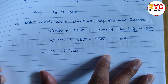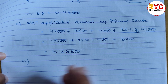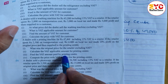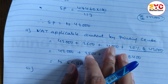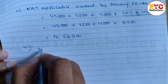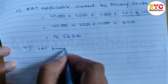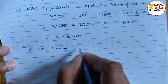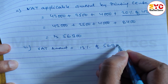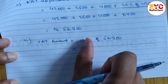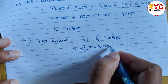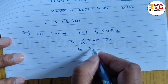Question number three: find the VAT amount paid by the printing center. VAT amount is equal to VAT percent, which is 13%, of Rs. 56,900. So 13 divided by 100 into Rs. 56,900, and when you calculate this we get Rs. 7,397.